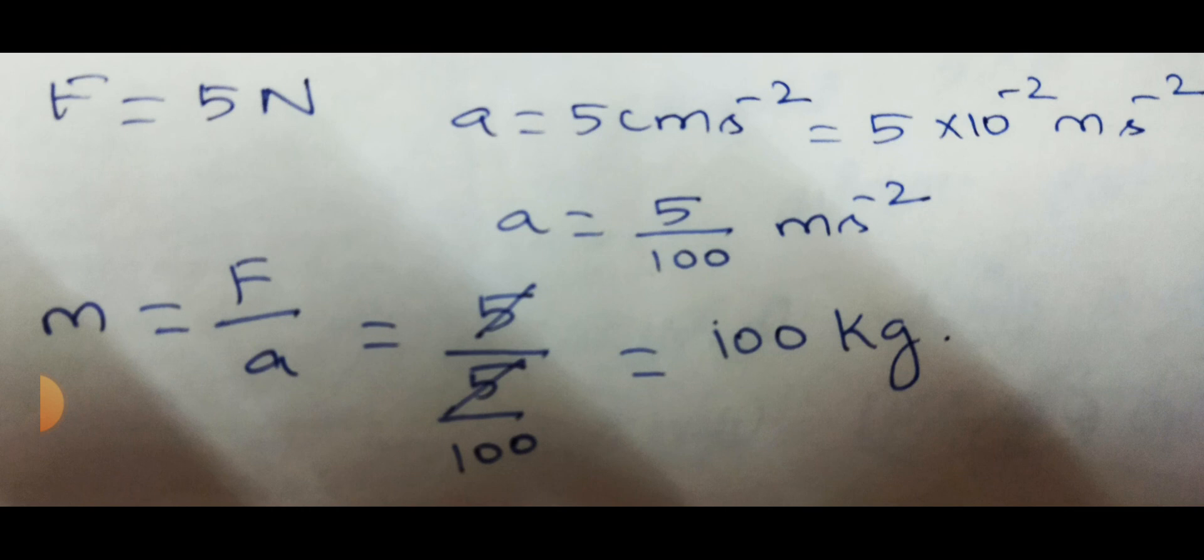So the acceleration is, they are given in terms of centimeter. Convert the centimeter in terms of meter. 10 power minus 2 meter. If the 10 power minus 2 is coming to the denominator, 10 power minus 2 becomes plus 2. So that is 100. So 5 by 100 meter second power minus 2.